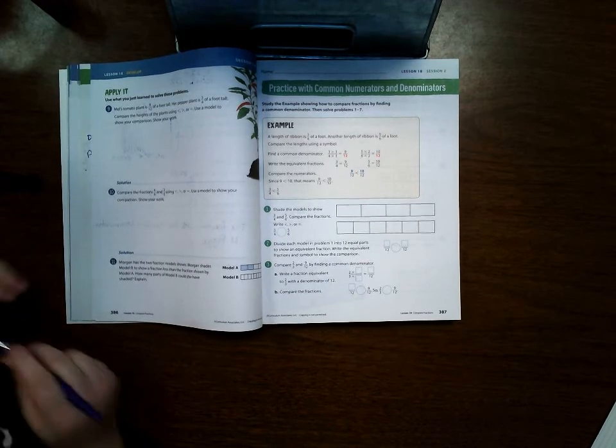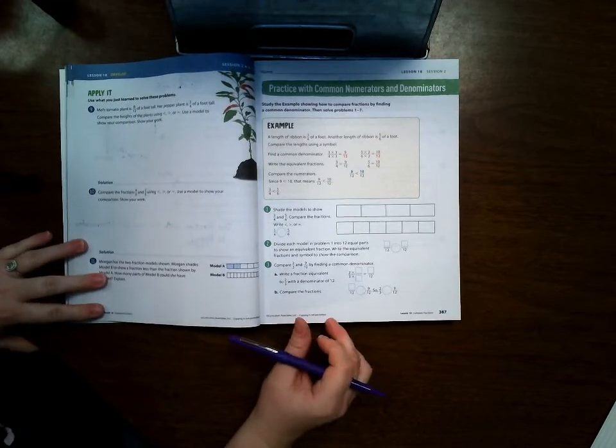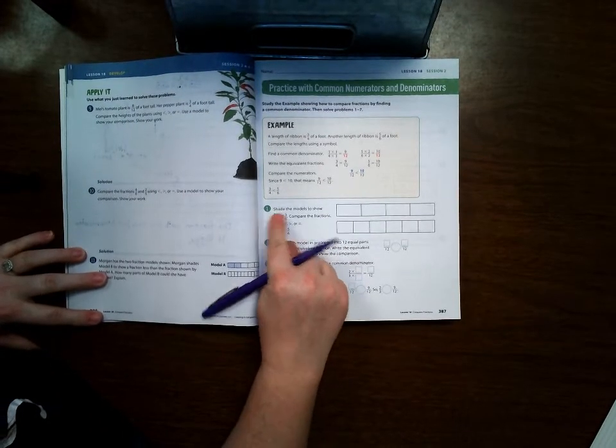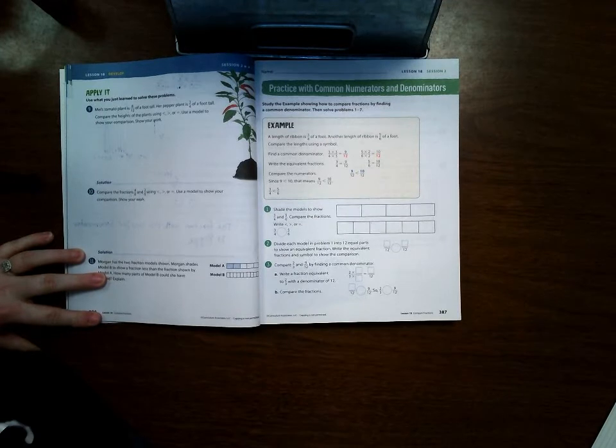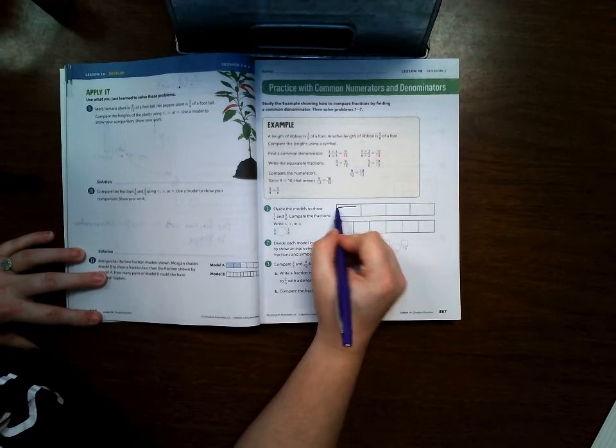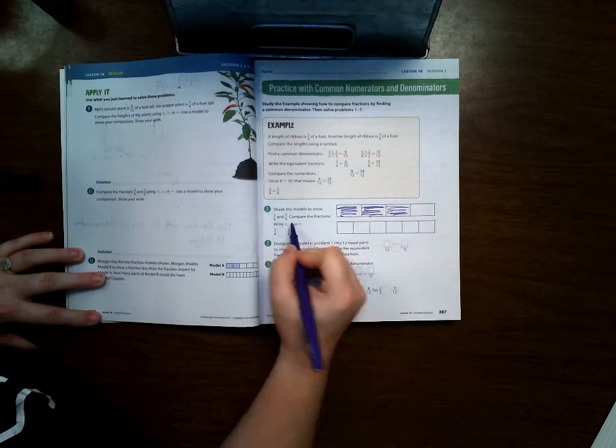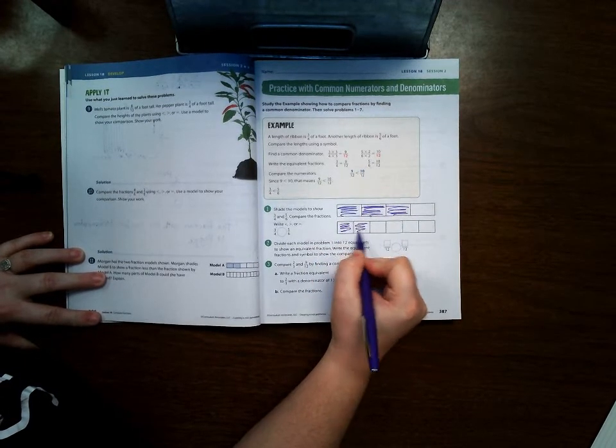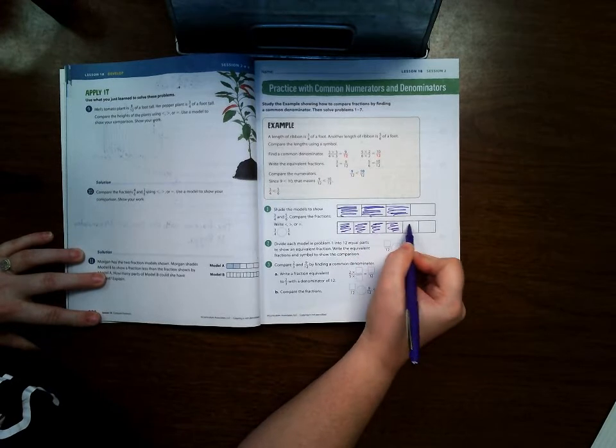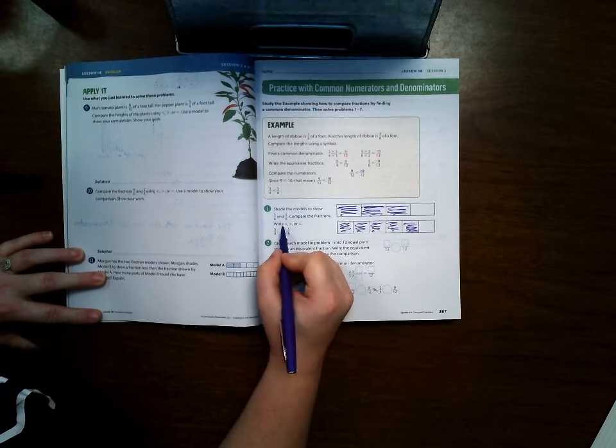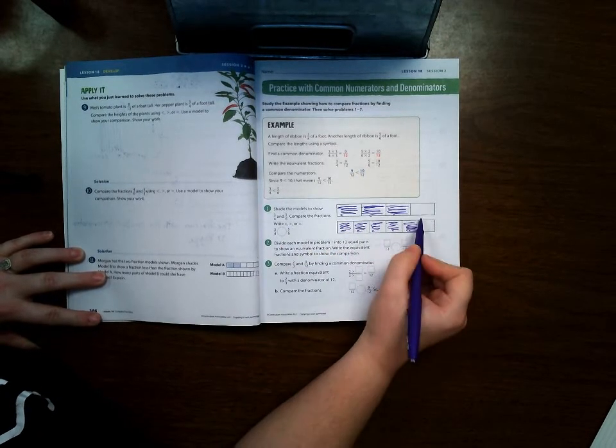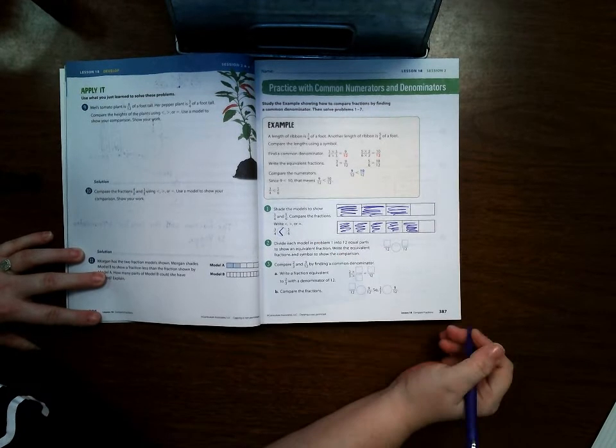Alright welcome back. I hope that you went ahead and completed these pages to check your answers. So right here it says shade the models to show 3/4 and 5/6. Write greater than, less than, or equal to. Well obviously 5/6 is further along so it's greater than.